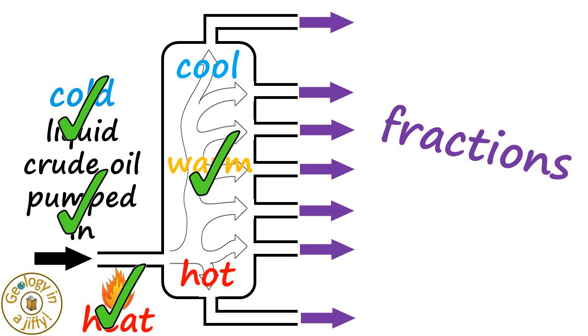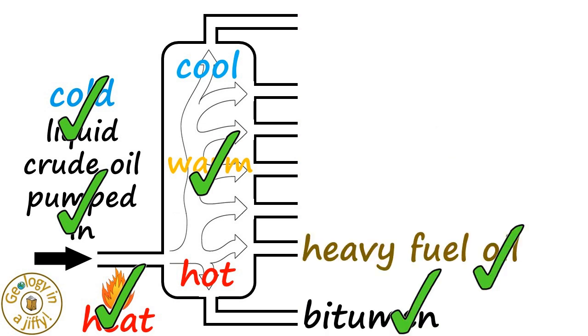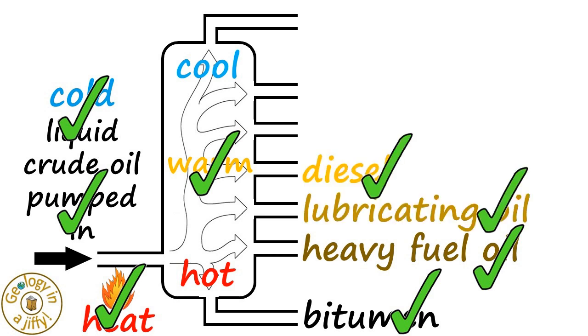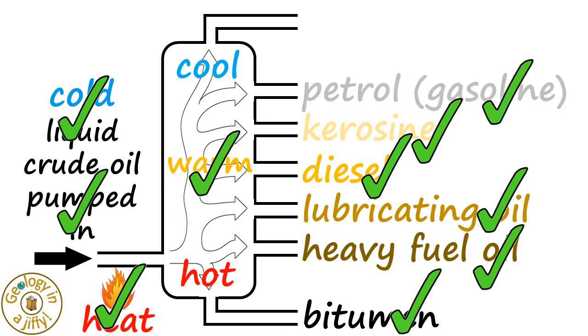Which starting at the base are bitumen, heavy fuel oil, lubricating oil, diesel, kerosene, petrol, known as gasoline, and finally, refinery gases.